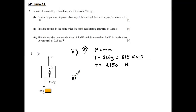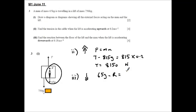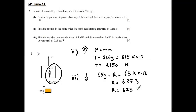In part three, we are asked to work out the reaction between the floor of the lift and the man when the lift is accelerating downwards. So I am focusing on just the man on the lift this time. The resultant force this time will be 65G minus R, and again that equals mass times acceleration. Solving to find R, just be careful that the answer comes out as 625.3, and I want to make sure that I give my answer to three significant figures as illustrated.